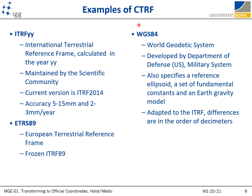There are more definitions and realizations of conventional terrestrial reference systems and frames, and here are a few examples. The ITRF is calculated every few years and maintained by the scientific community. The current version is from 2014, with a positional accuracy of some 5 to 15 millimeters for the position of points and 2 to 3 millimeters per year for the velocity of points. The goal of the next ITRF realization is to achieve an accuracy of around 1 millimeter for the position of each station.